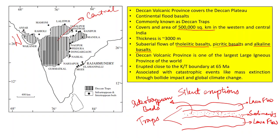The Deccan Volcanic Province erupted close to the Cretaceous-Tertiary boundary at 65 million years ago. This eruption is associated with catastrophic events like mass extinction, which was not the result of volcanic eruption alone but also a bolide impact — that is, an asteroid impact — and global climate change.